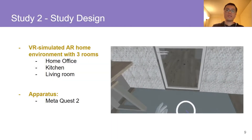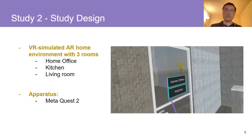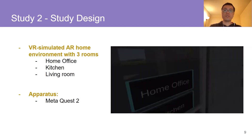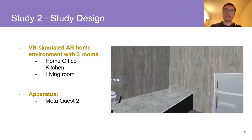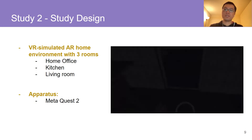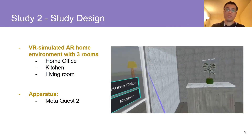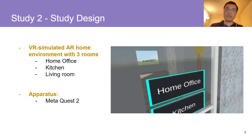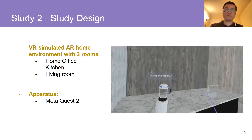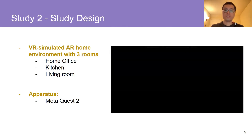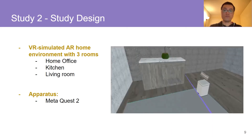After figuring out the major challenges and potential solutions, in a second study we developed three interfaces to help transition AR UIs with different levels of automation and controllability. Due to the pandemic and to avoid unstable multi-room tracking with current AR systems, we developed a VR-simulated AR environment for evaluation. The environment included three rooms — a home office, a kitchen, and a living room — and participants could move between these rooms by touching a button on the virtual door.